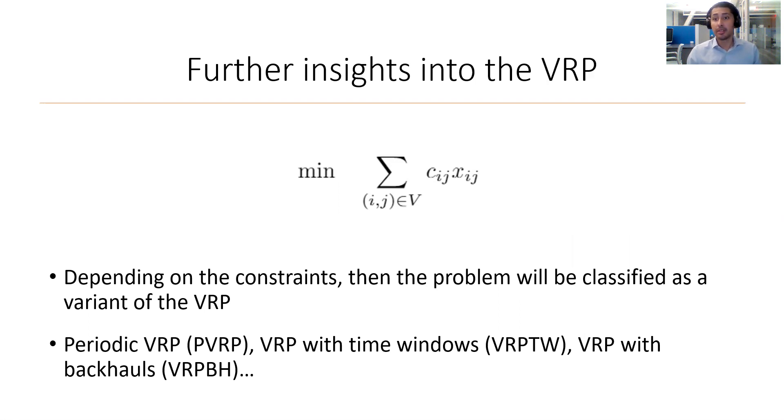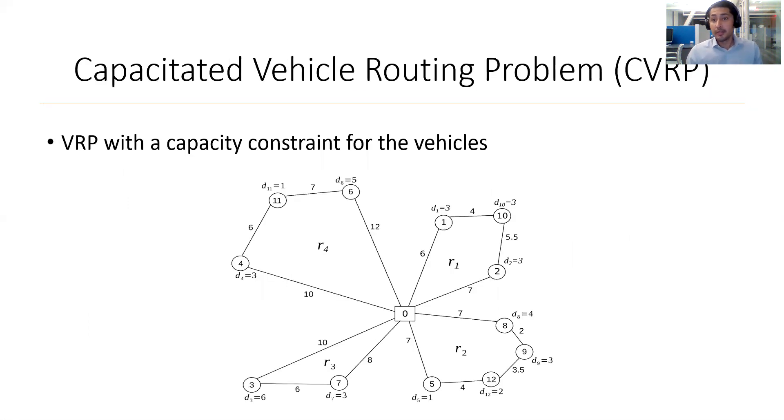Our interest lies on the CVRP, the capacitated vehicle routing problem. The CVRP has the additional consideration that the vehicles have some capacity constraint when servicing these nodes. An example is shown here. It displays a CVRP with a single depot in the center, servicing 12 customer nodes with 4 vehicles. The demand for each customer can be seen next to the nodes indicated by the D. Again, being an NP-hard problem, it is difficult to solve these problems. Still, many methods have been designed to tackle this.